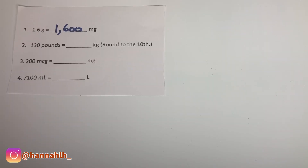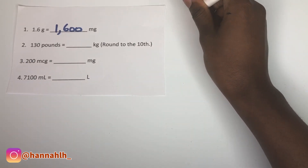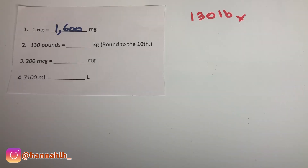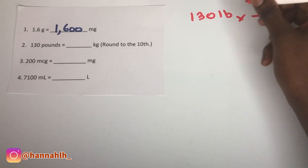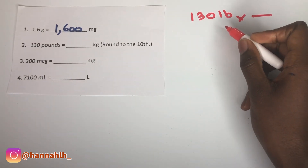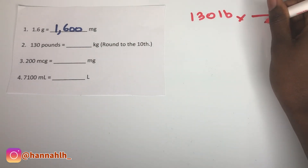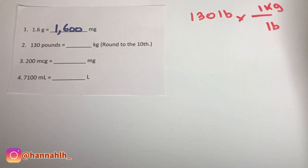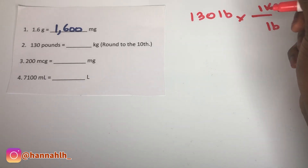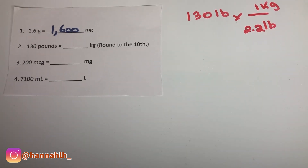Number two is asking us to convert 130 pounds to kilograms. So I'm going to write it out: 130 pounds. We're converting it to kilograms, so what you want on the bottom is what you're trying to cancel out. I'm trying to cancel out pounds because we want our answer to be in kilograms. Pounds can't convert directly to kilograms — 2.2 pounds is equal to one kilogram.